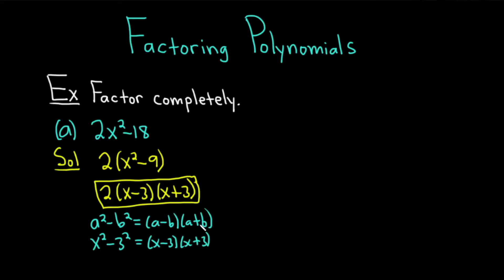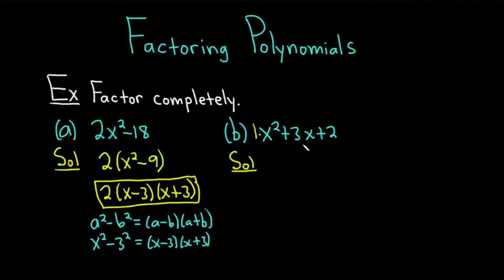Let's go ahead and do another example. Part B, we have x squared plus 3x plus 2. Let's go ahead and try to factor this. Because we have a 1 in front of the x squared and there's no common factors, we're going to try to factor this by guessing. You write two parentheses with an x in each. Now we need two numbers that multiply to 2 and add to 3. That's just 1 and 2, and they're both positive.